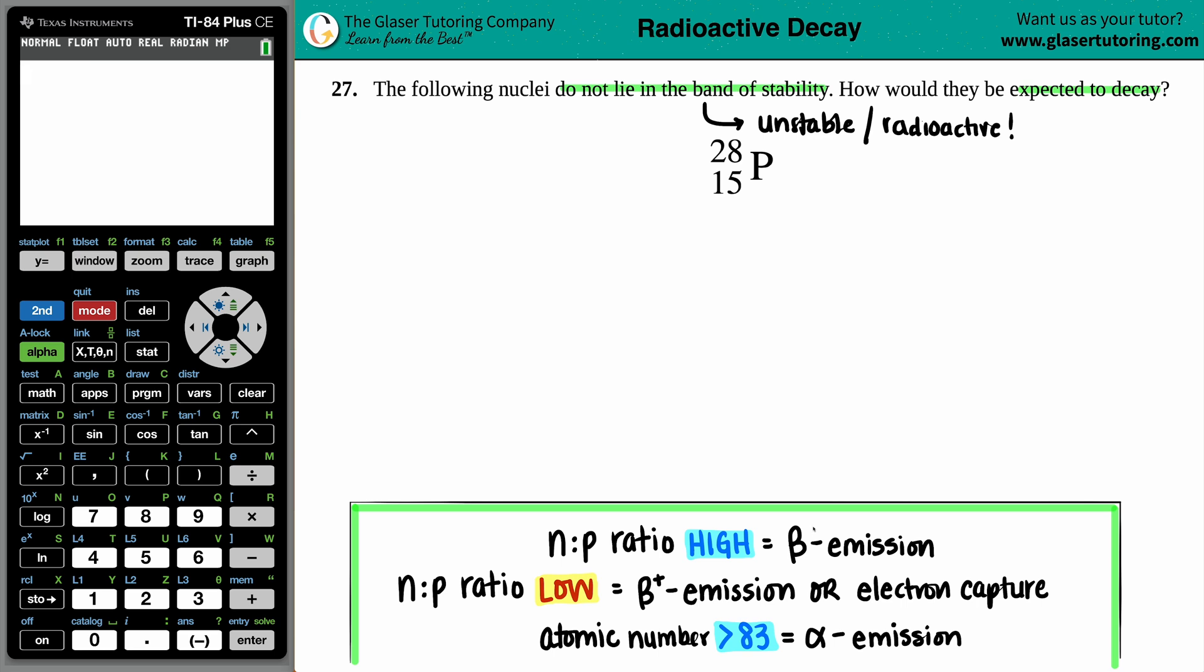Whether we're going to be undergoing beta emission, or positron emission (β+ or beta plus is a positron), electron capture, or alpha emission. The first thing is always look at that atomic number.